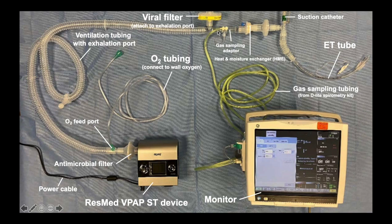and on the exhalation port is where a viral filter is placed. A gas sampling adapter is attached to the end of the distal tubing, and this is in turn attached to a GE anesthesia monitor. Having this component in place allows the monitoring of flow, tidal volume, delivered FiO2, as well as end tidal CO2. Attached to the gas sampling adapter is an inline heat and moisture exchanger for humidification of the delivered air flow, and this is attached directly to the suction catheter and the endotracheal tube.